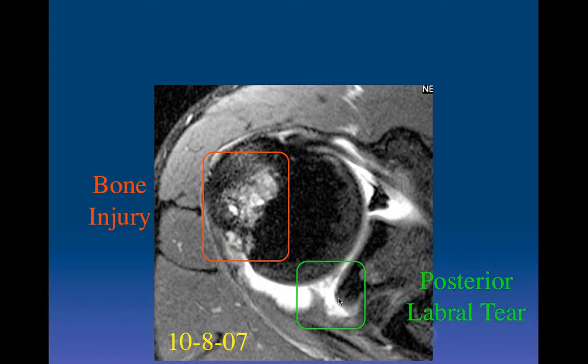What is the mechanism for massive posterior labral tears? These are typically seen in weight lifters from bench pressing. When you bench press, the elbow should never go below the humeral head - the farthest down you should go is having the humerus parallel to the floor. But because that limits how much weight you can lift, some lifters go farther down, bouncing off the posterior labrum to get a push and lift more weight. This puts tremendous forces on the posterior labrum.